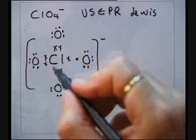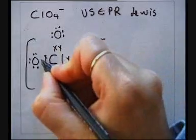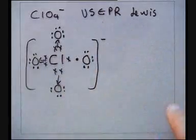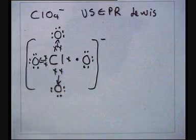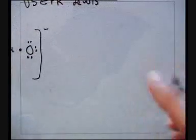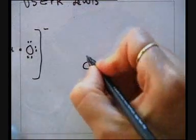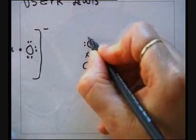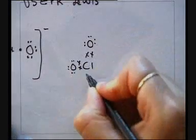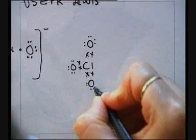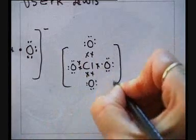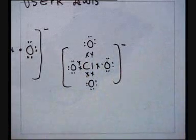It is possible to form electron octets around the three Oxygen atoms with six valence electrons by making use of dative covalent bonds or coordinate covalent bonds. For a first suggestion, we propose a central Chlorine atom bonded to three Oxygen atoms with single bonds to the Oxygen atoms.